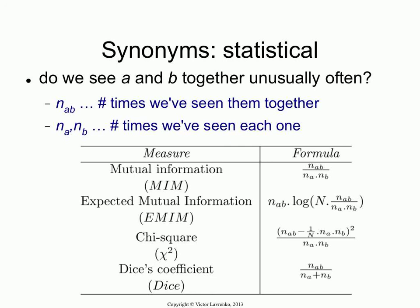These are different ways to measure co-occurrence, taken from the book. The higher the number that you get, the more related the two terms are, because the more unusually co-occurring they are. That's the way to interpret these things.